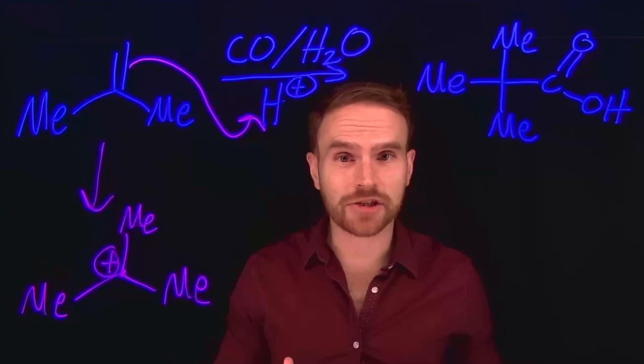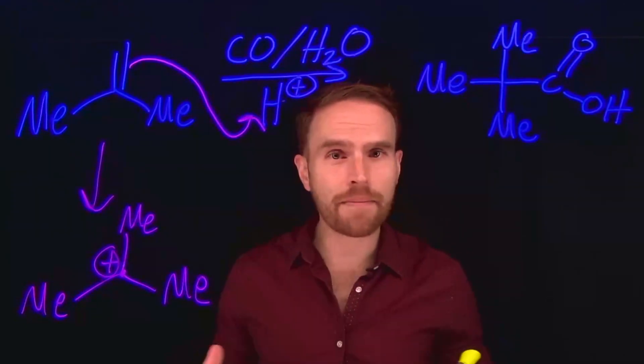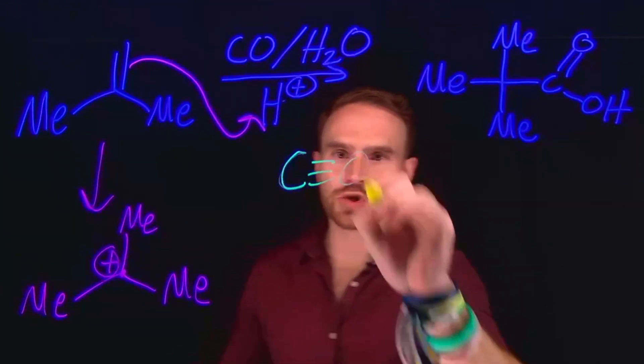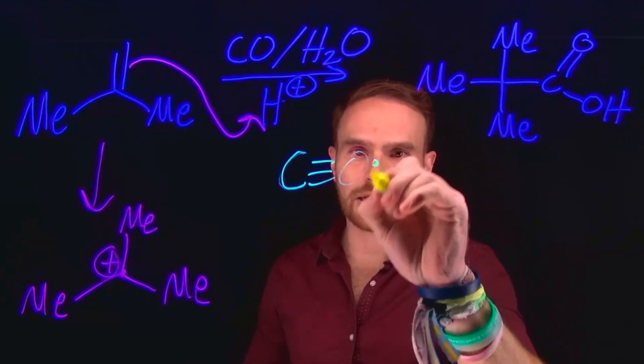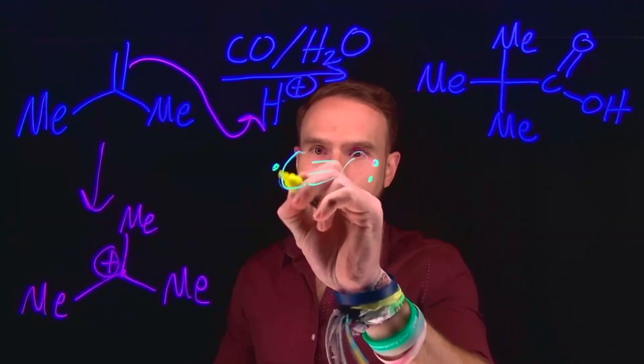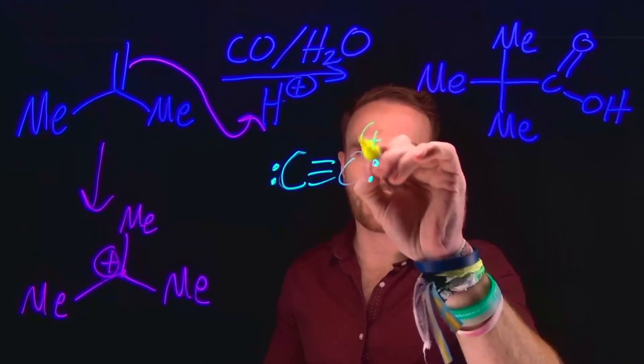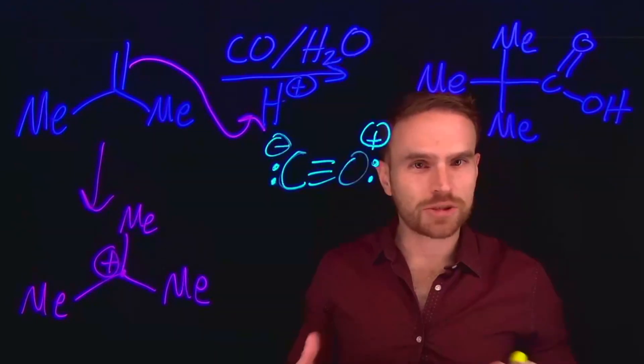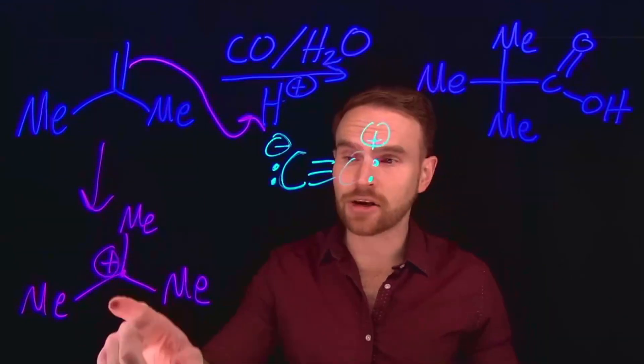And this is important because the next step is actually going to be a nucleophilic attack by the carbon monoxide. Remember that carbon monoxide, if you're to draw the Lewis structure of this, there's a triple bond between carbon and oxygen. Each of these atoms contains a lone pair of electrons. And importantly, if you're to calculate the formal charge at each atom, you would see that there's a positive charge on the oxygen and a negative charge on the carbon, which means that this carbon is nucleophilic and will attack things like carbocations.